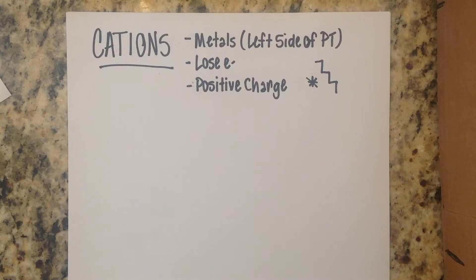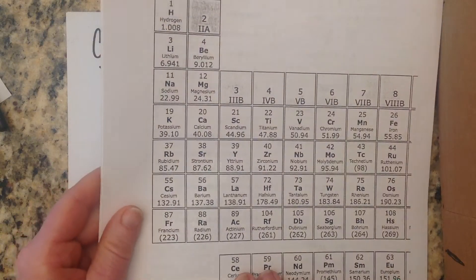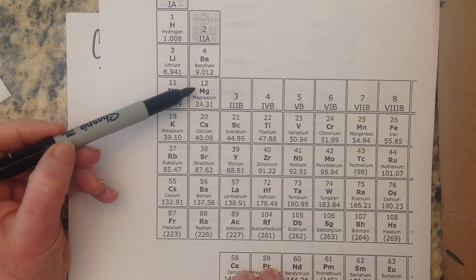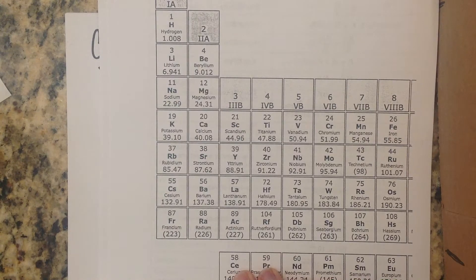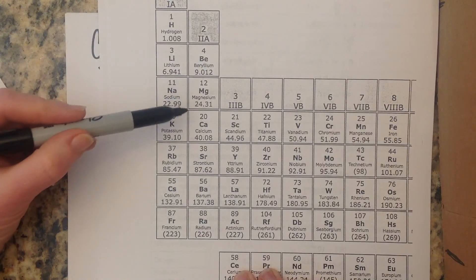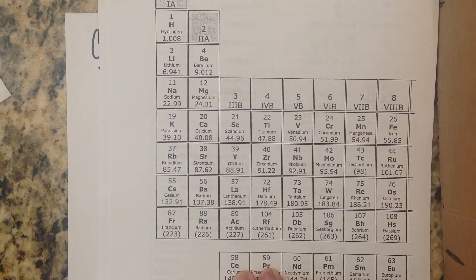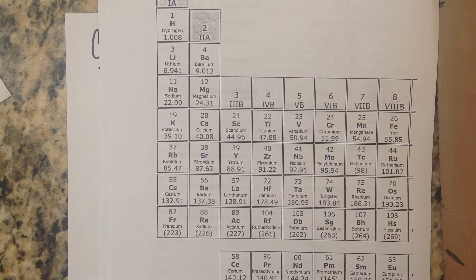When metals lose electrons, they end up with a positive charge. Let's look at magnesium. Magnesium has an atomic number of 12, meaning a neutral atom of magnesium has 12 protons in the nucleus and 12 electrons. If you have 12 positively charged particles and 12 negatively charged particles, those charges balance each other out — that's why the atom as seen on the periodic table is neutral. Neutrons don't have a charge, so we're not worried about those.